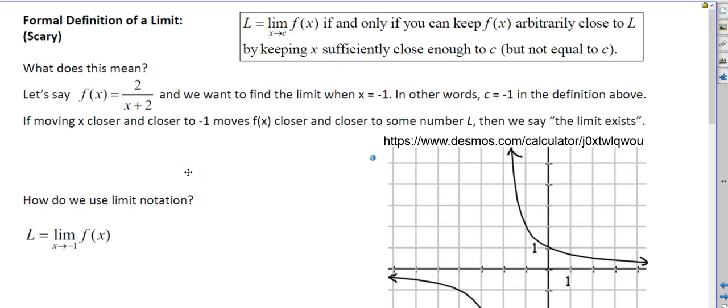We're going to talk about limits here. We've talked about some examples of limits from things we've done in the past in the class, but now we're going to look at the formal definition of a limit. And I call this the scary definition because this is the kind of thing you're going to see in a math textbook, and it really is hard to wrap your mind around without some examples. It says here, L is the limit as x goes to c of f(x), if and only if you can keep f(x) arbitrarily close to L by keeping x sufficiently close enough to c, but not equal to c. What does that mean?